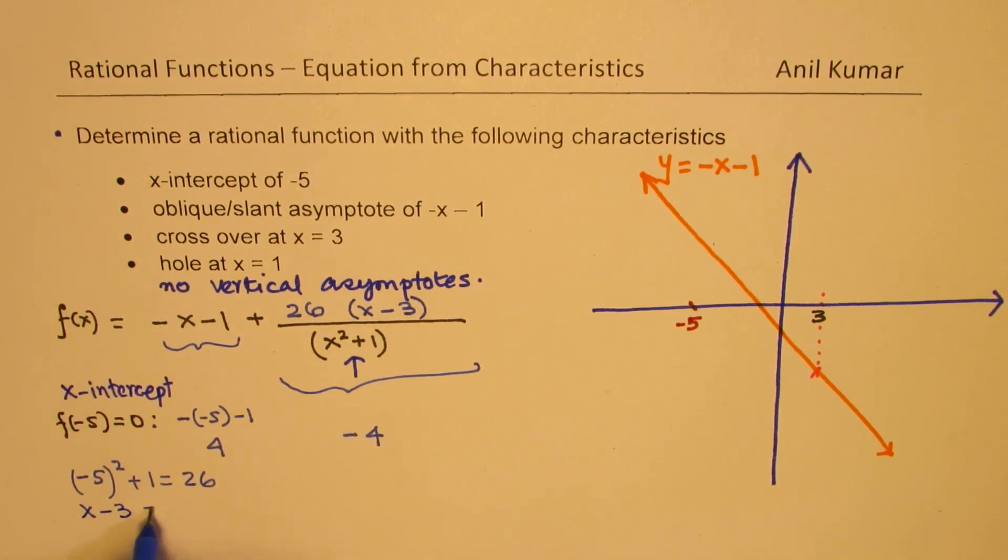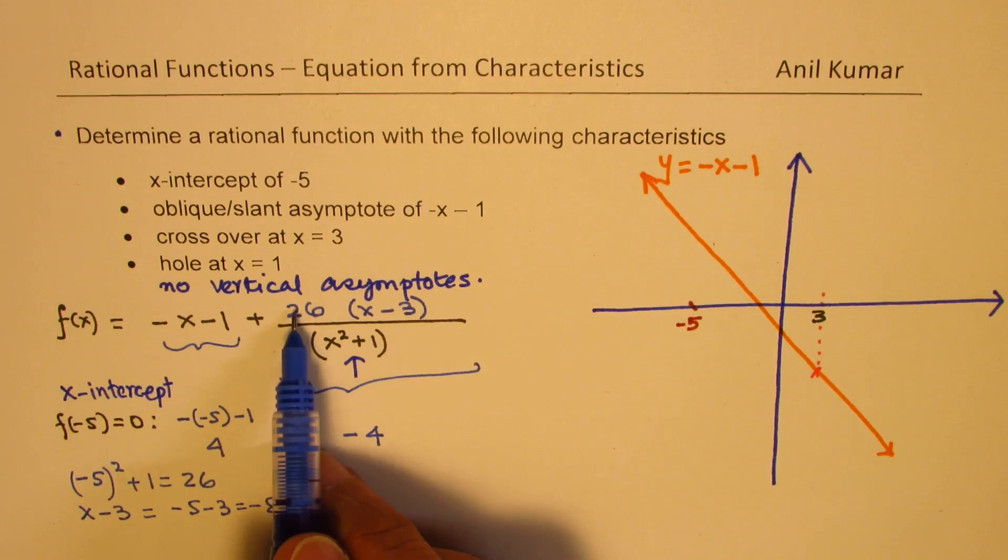If I write x minus 3, and if I write minus 5 here, then look here. x minus 3. When I substitute minus 5, minus 3, I get minus 8.